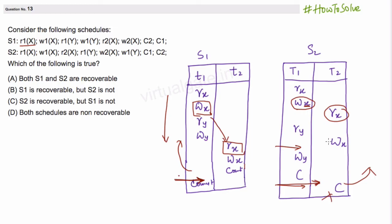This schedule is recoverable. S1 is not recoverable while S2 is recoverable. Here in this option S2 is recoverable, so this one is the correct option.